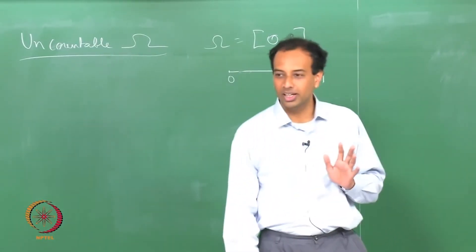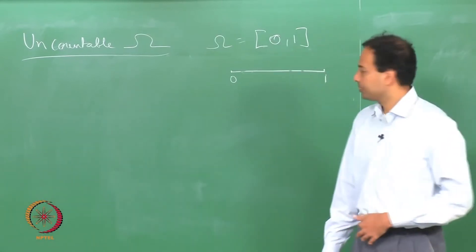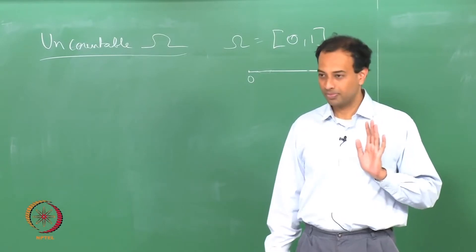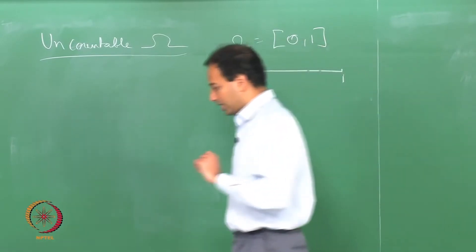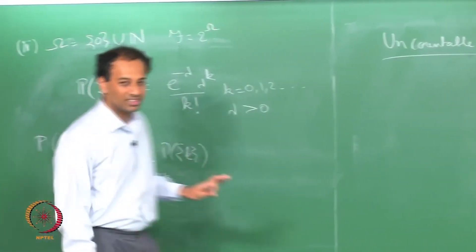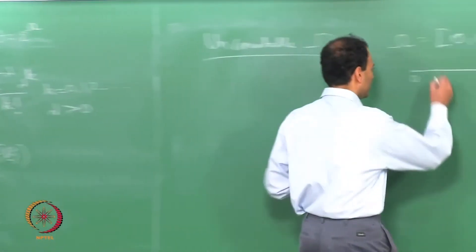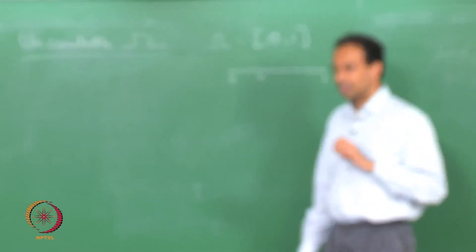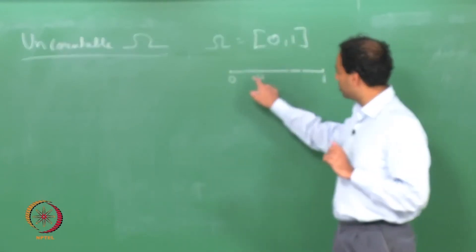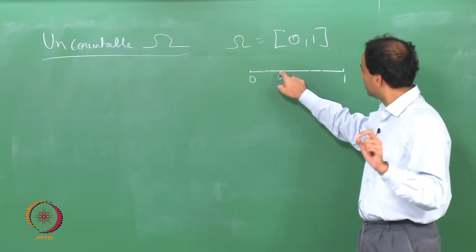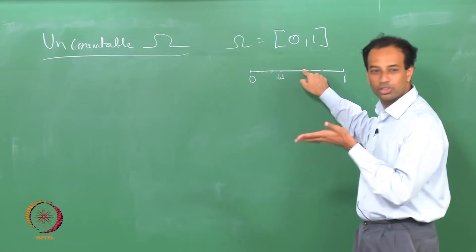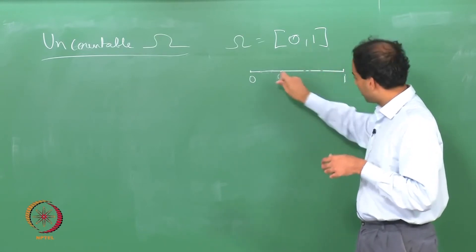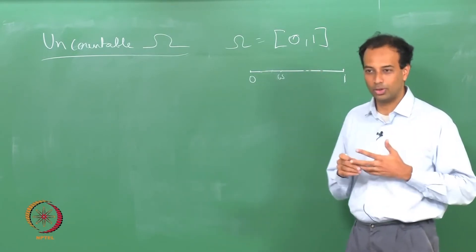That brings us to the problem: you cannot assign probabilities to all subsets of the [0,1] interval. The elementary approach of simply assigning probabilities to singletons will definitely not work. If you assign any positive probability to a singleton, you would need to put the same probability on every other singleton for uniformity, but there are uncountably many of them, so the total probability would blow up to infinity. The only option is to assign singletons probability 0.